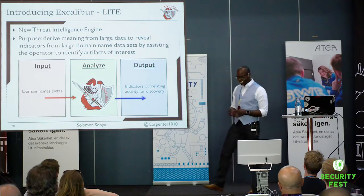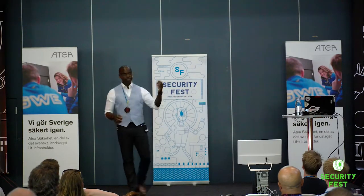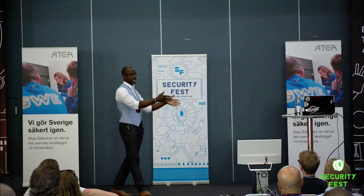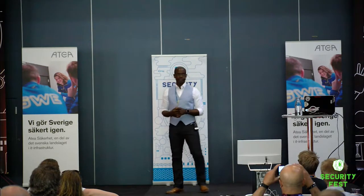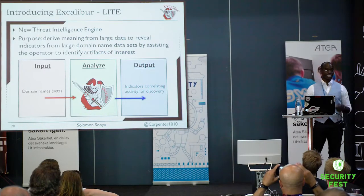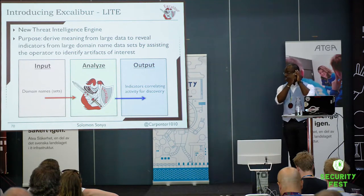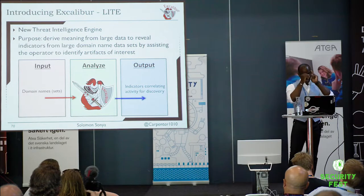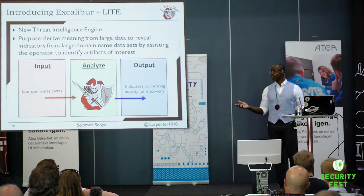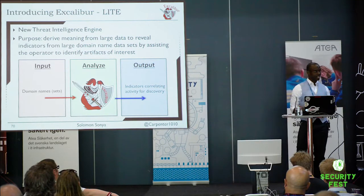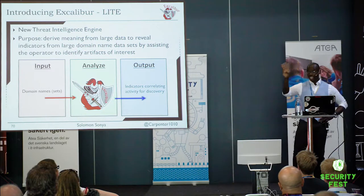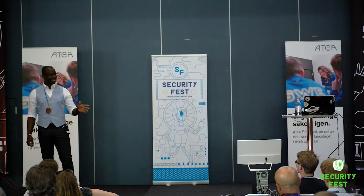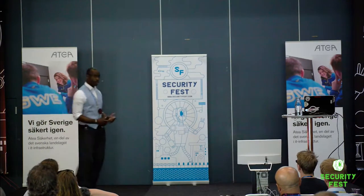I'd like to introduce Excalibur — Excalibur TIE, Threat Intelligence Engine — a tool I developed for performing analyses and correlations against various sites to bring in additional data. I first created it in 2013 and submitted it to conferences, but they didn't understand it. So I tabled it for three years. In 2017 I was asked to speak at a conference and decided it was time to talk about a Threat Intelligence Engine again — so the new Excalibur was born.